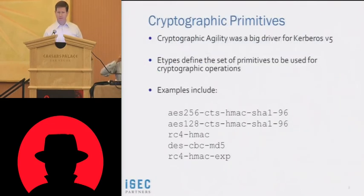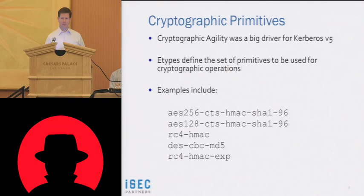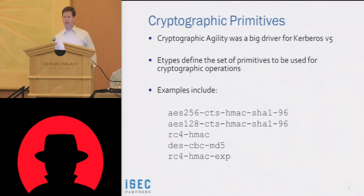One of the main drivers for Kerberos V5 was that Kerberos V4 did not have cryptographic agility. All symmetric keys and all encryption in Kerberos V4 used the DES encryption algorithm, which is not sufficient to protect traffic today. In Kerberos V5, you introduce the ability to negotiate which cryptographic primitives — encryption algorithms, hashing algorithms, and so on — to use for protecting different Kerberos message exchanges. I'll call these encryption types, or E-types for short.